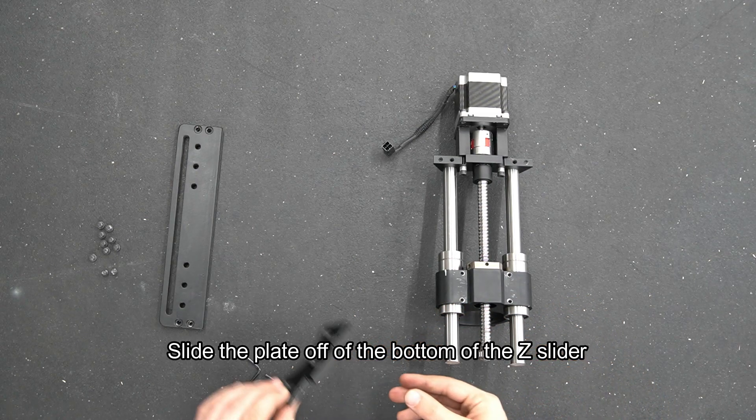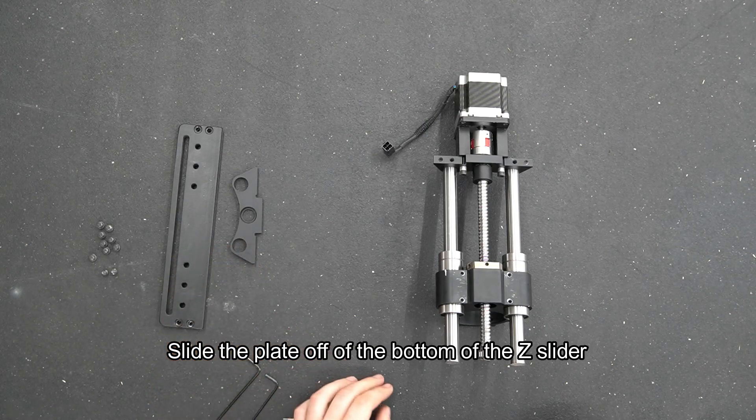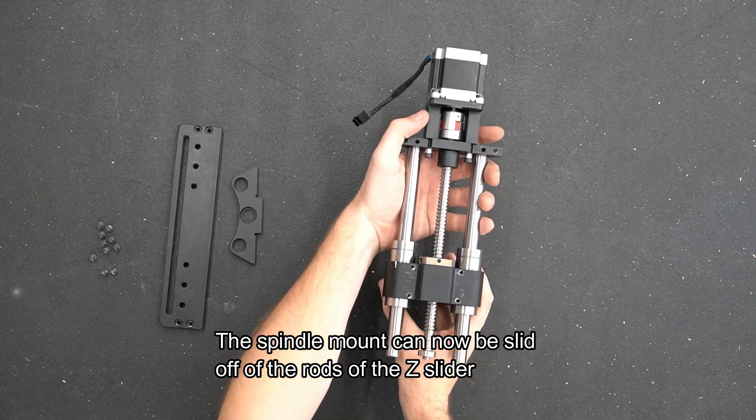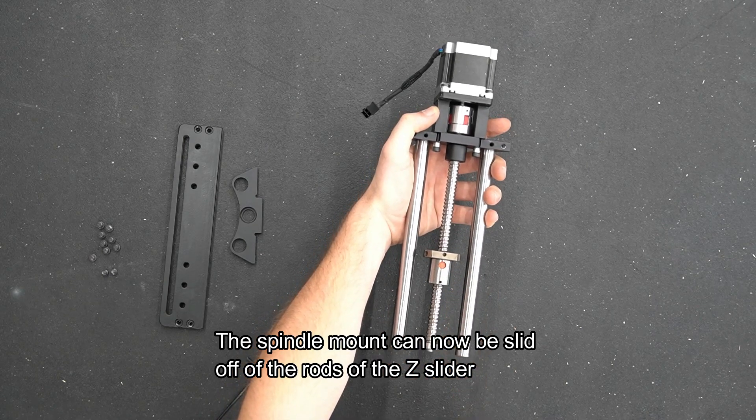Slide the bottom plate off of the Z slider. You can now slide the spindle mount off of the rods on the Z slider.